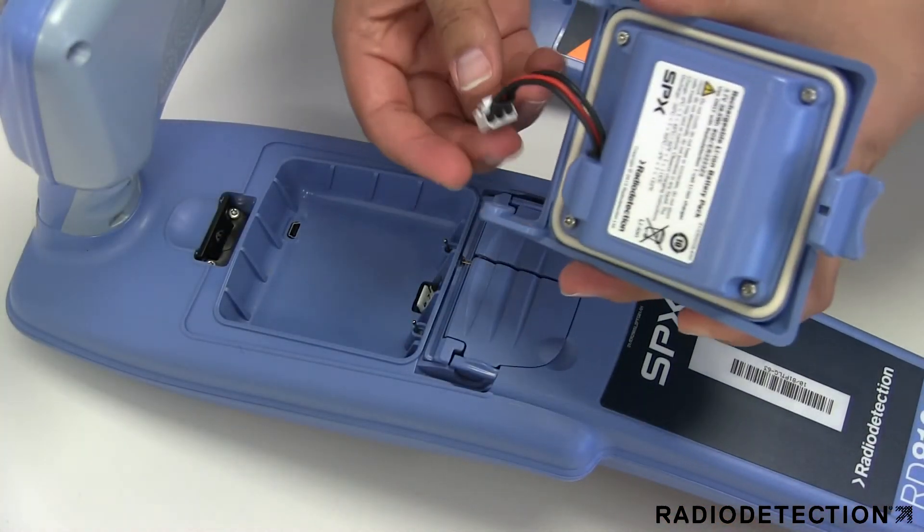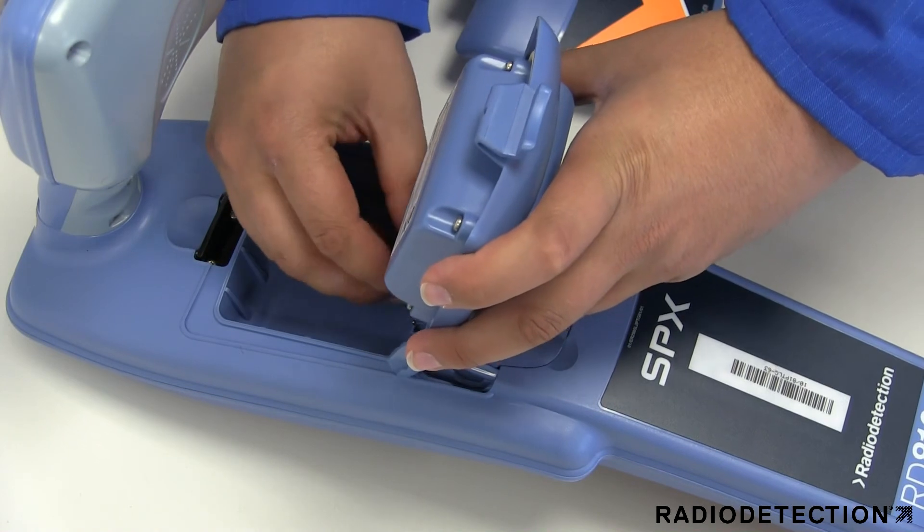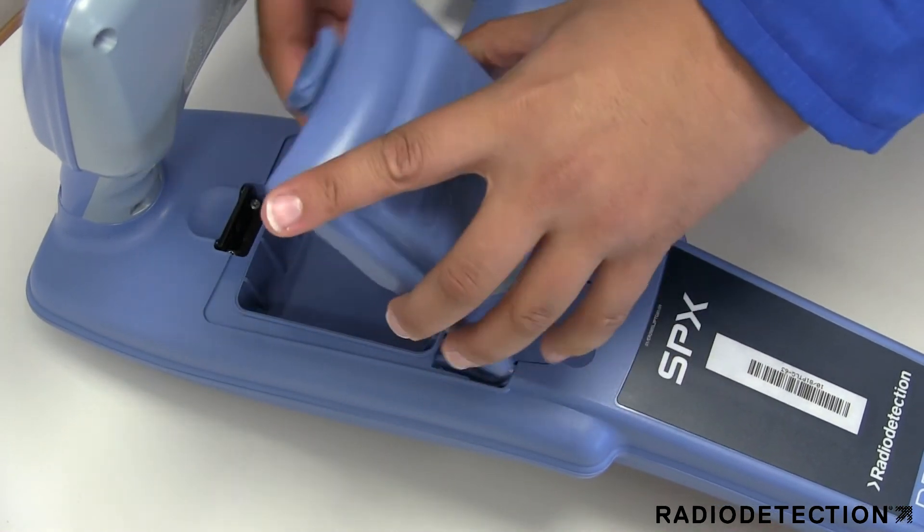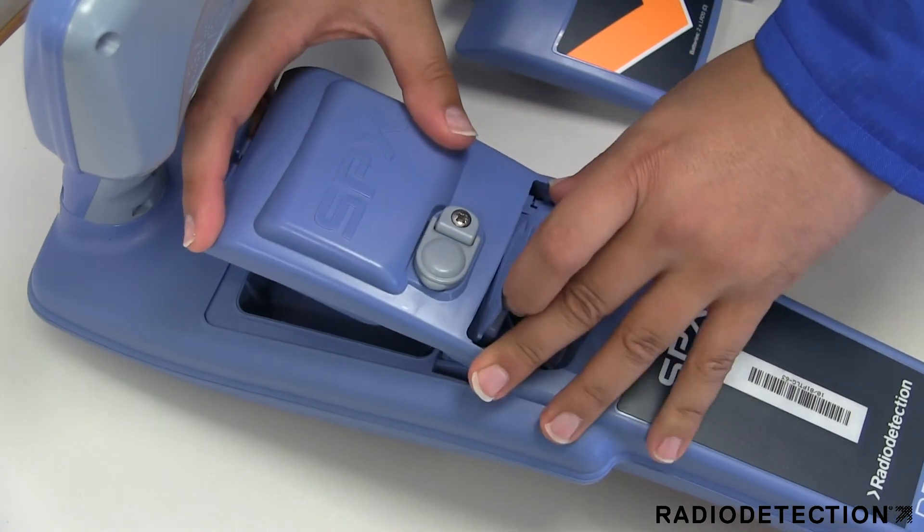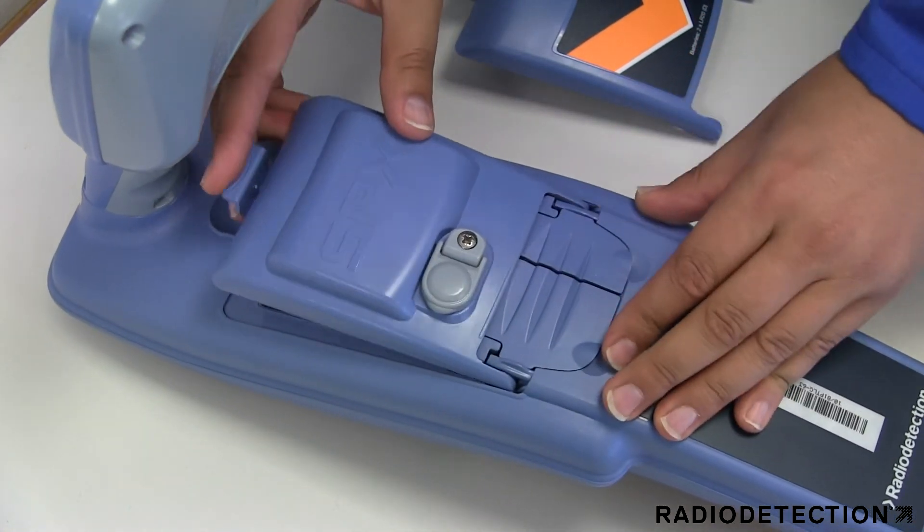To fit the new rechargeable battery pack, plug the lead into the battery connector, lift both accessory covers slightly, then gently push the replacement pack into place until it clicks on both sides.